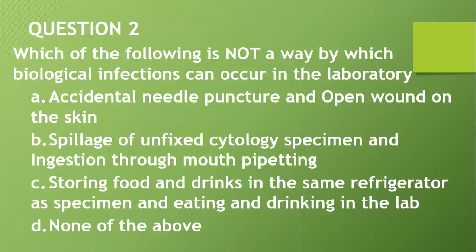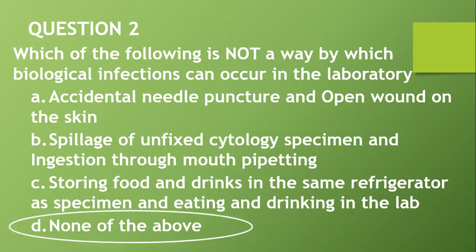Question two: Which of the following is not a way by which biological infections can occur in the laboratory? Options include accidental needle puncture and skin injury, spillage of unfixed cytology specimen, ingestion through mouth pipetting, storing food and drinks in the same refrigerator as specimens, and eating and drinking in the lab. All of them are ways infections can occur, so the answer is none of the above.